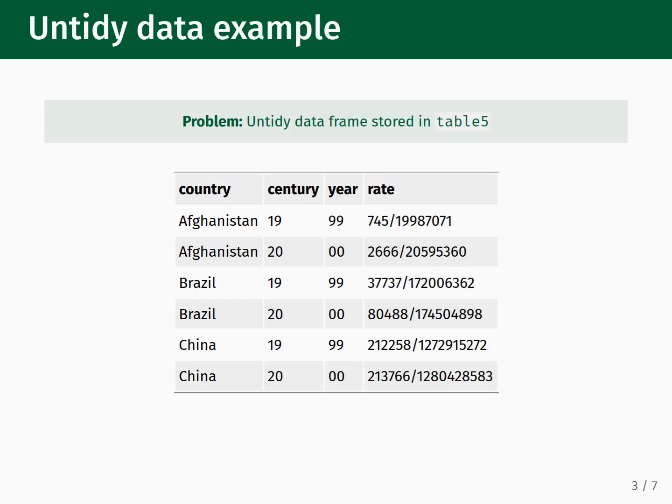To illustrate how the Unite function works in practice, we will consider the contents of Table 5, which is another way to organize the same subset of data from the 2014 World Health Organization Global Tuberculosis Report that we used in the Gather, Spread, and Separate examples. Here we see that we have four columns: Country, Century, Year, and Rate. The Century column is the first two digits of the full year, and the Year column is the last two digits of the full year. Each cell under the Rate column contains two pieces of information — the number of tuberculosis cases and the total population for each country for a given year. These values are separated by the forward slash symbol.